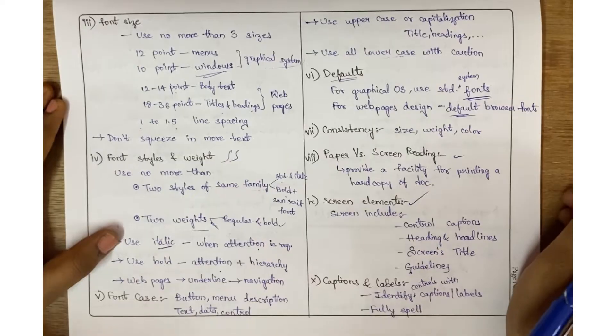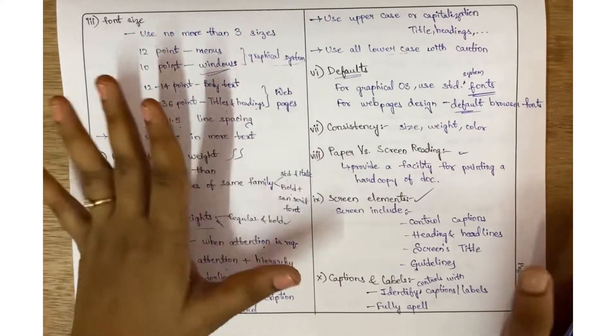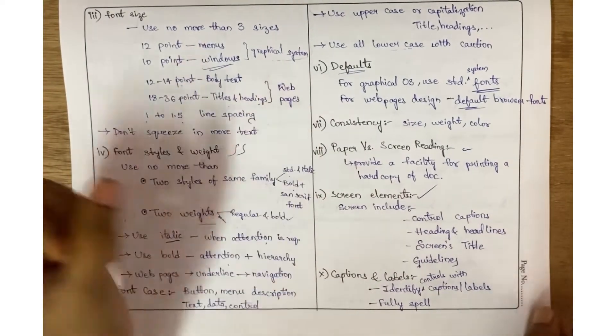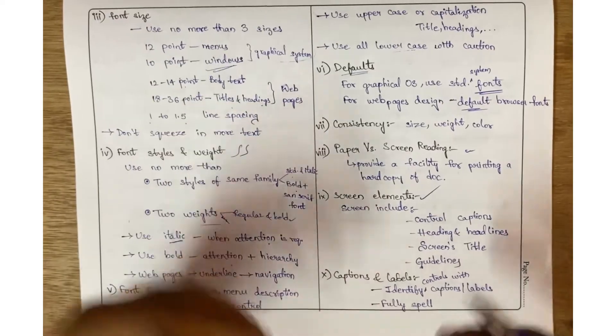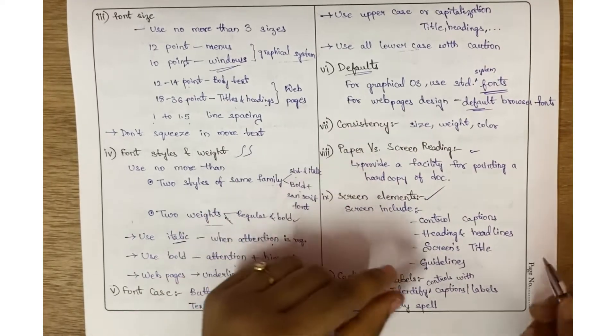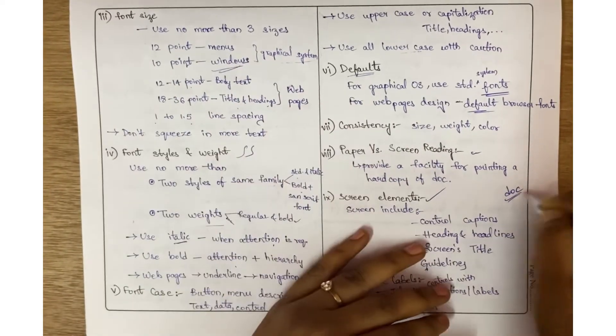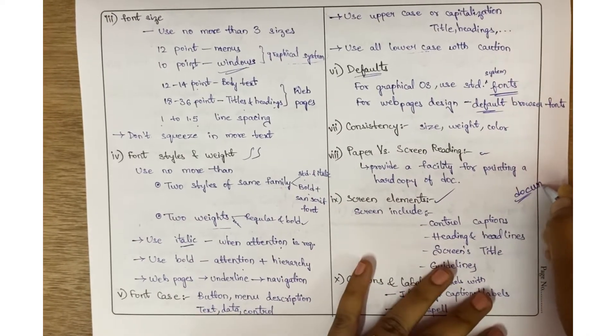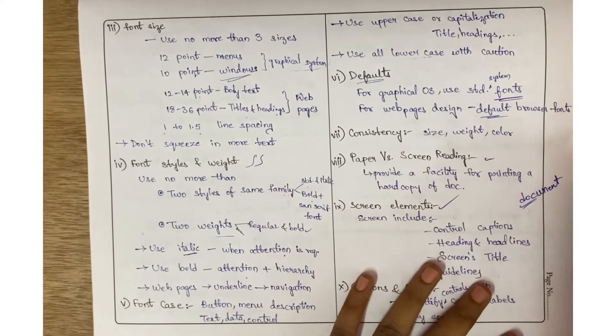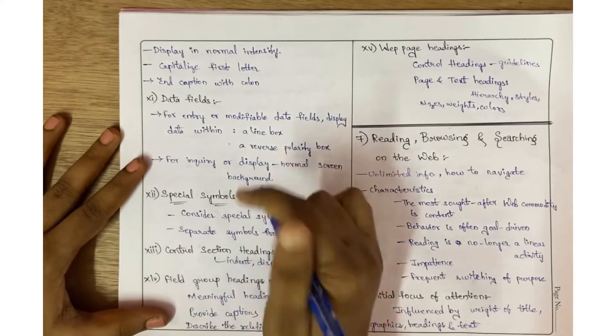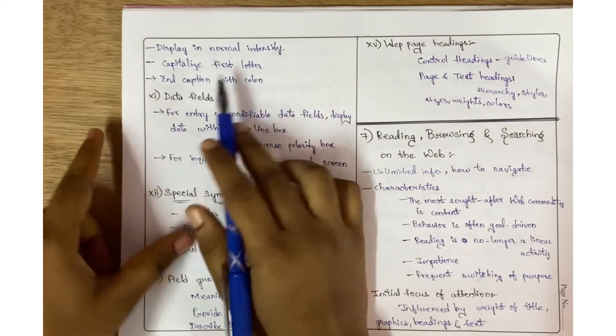Screen elements should include all the control captions, headings, and screen titles, and guidelines, captions, and labels. All the controls should be identified with captions and labels, and they should be fully spelled. If I say 'doc', it might be just 'doc' or any other file, but I need to spell it completely as 'document' so everyone will get clarity.